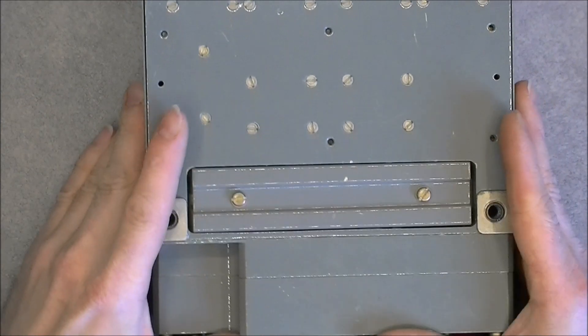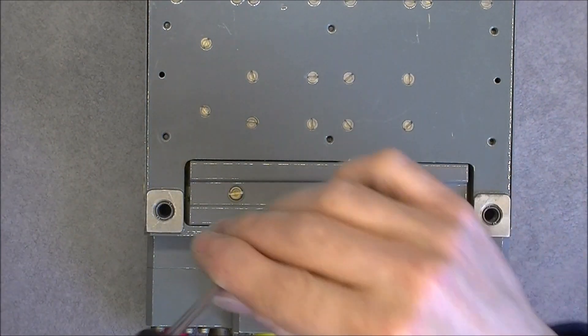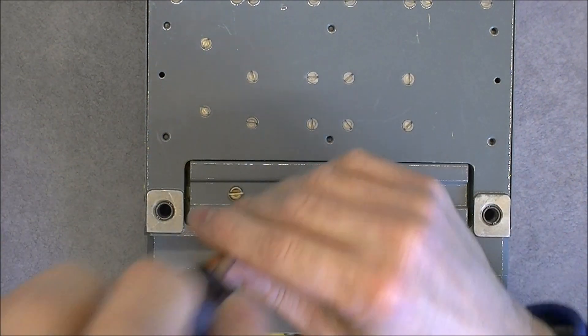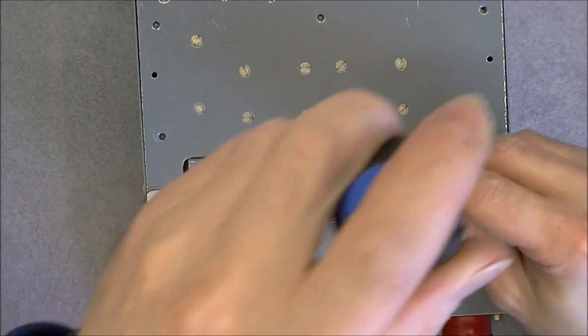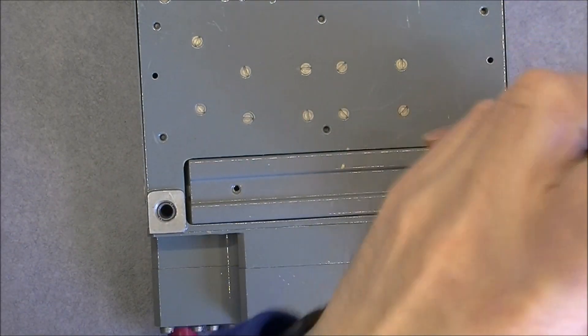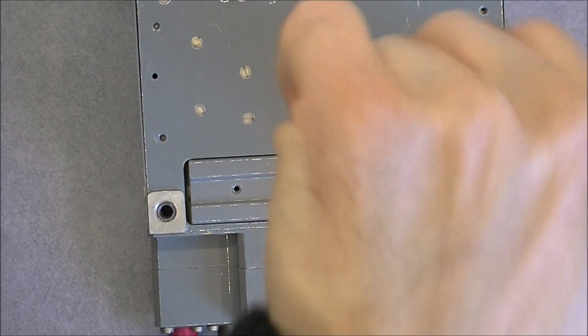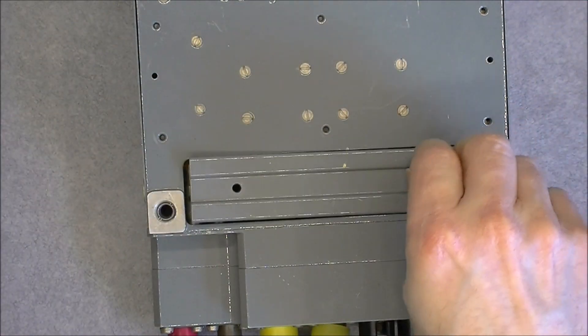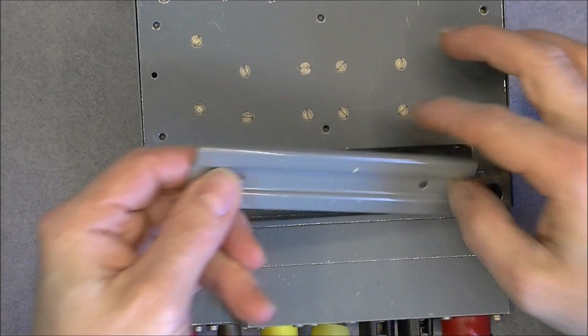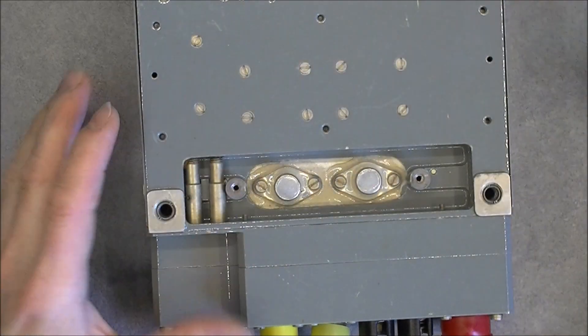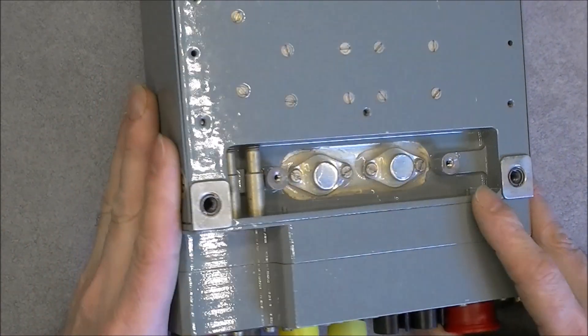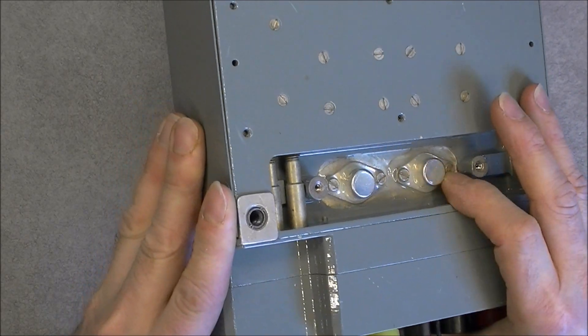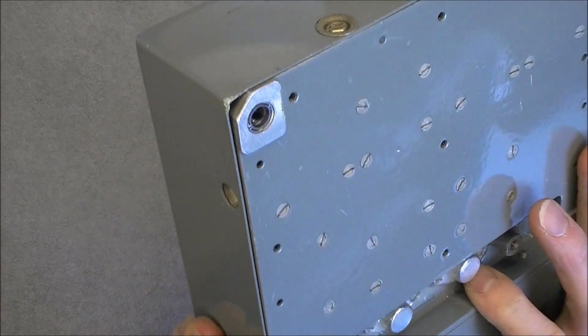So here we have a little cover. We will start with removing this one because it will be quite straightforward. So as you can see, a little cover with two transistors.